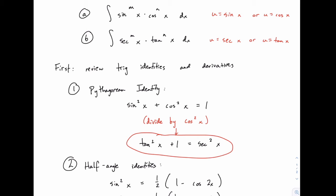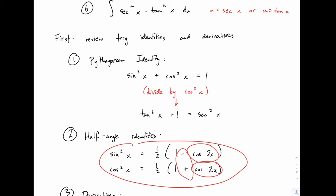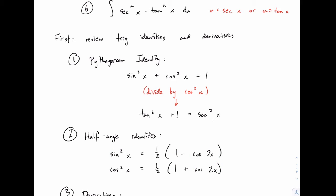So there's a lot of rewriting one type of trig function in terms of its pair — sine and cosine, or secant and tangent — and then there's a u substitution process. There are also a couple more identities that relate sine and cosine: the half-angle identities. Sine squared of x equals one half times one minus cosine of two x, and cosine squared is the same except with a plus instead of a minus. Those will be useful to us as well.